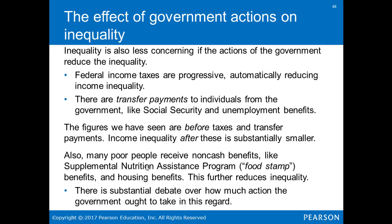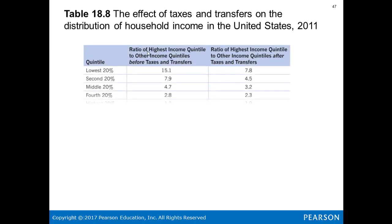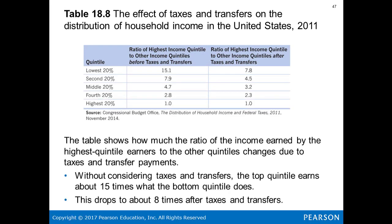There are also transfer payments to individuals from the government, like Social Security and unemployment benefits. The figures seen previously are before taxes and transfer payments — income inequality after these is substantially smaller. Many poor people also receive non-cash benefits like SNAP (Supplemental Nutritional Assistance Program), food stamps, and housing benefits, further reducing inequality. The effect of taxes and transfers on household income distribution in 2011 shows that the ratio of highest income to other income is reduced almost in half in certain brackets — without these, the top earns about 15 times the bottom; this drops to 8 times after taxes and transfers.